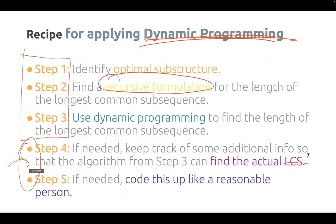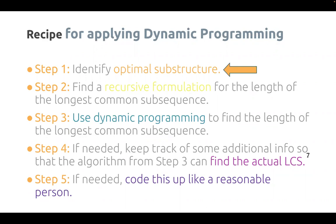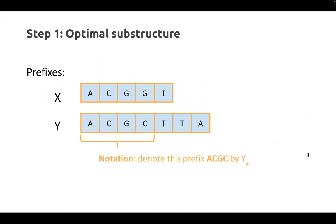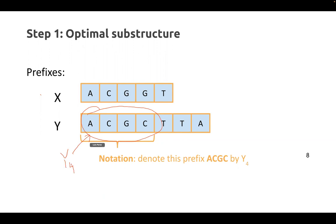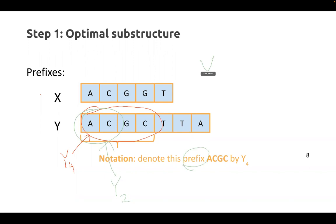Let's talk about identifying optimal substructure. We have two strings X and Y. We're going to denote the prefix of a string by a subscript. For example, the string ACG is going to be called Y-sub-4. The string AC is going to be called Y-sub-2. So Y_i means take Y from zero and include everything up to the i-th character.